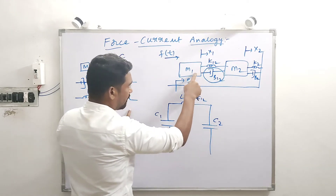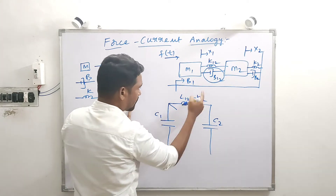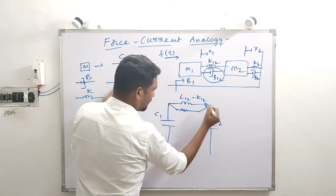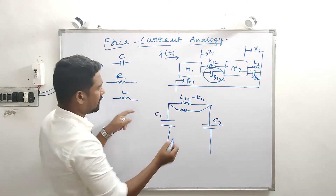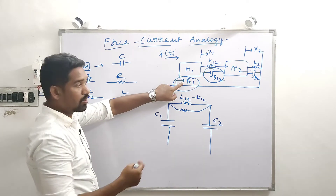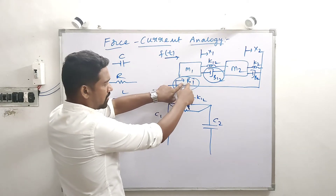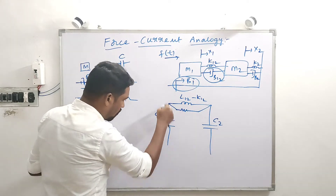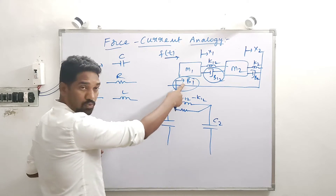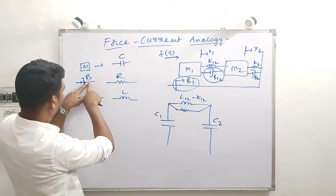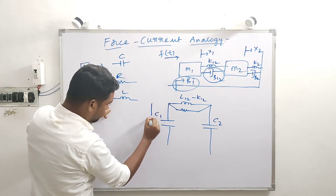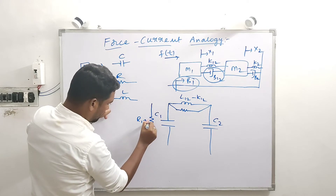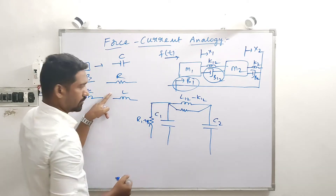The dashpot B12 is common between M1 and M2, so it is represented by equivalent resistor R between C1 and C2. B1 is exclusively for M1 — it is not common between M1 and M2. Remember that. B is analogous to R, so we have R1 which is equivalent and analogous to B1, placed only for M1.